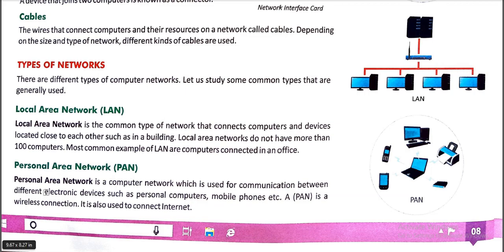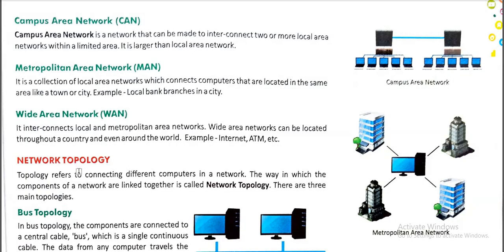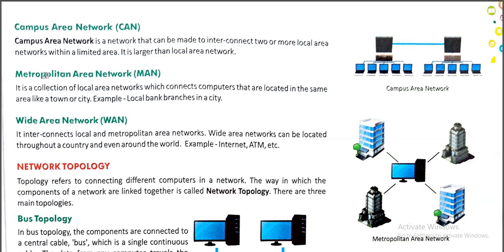Next is PAN — Personal Area Network. A Personal Area Network is a computer network used to communicate between devices for a single person. We can say it is a personal network. We can share with whichever person we want to communicate with. An important feature of PAN is that it uses a wireless connection — there is no need for a wire.